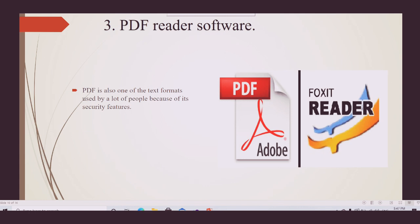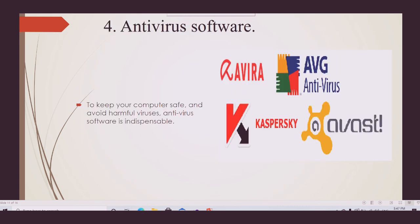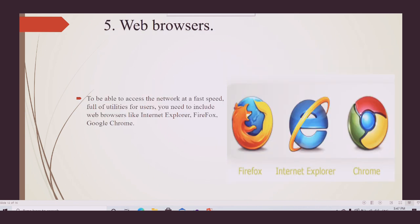Number four: antivirus software. To keep your computer safe and avoid harmful viruses, antivirus software is essential for security. Number five: web browser. A web browser allows you to access the network at fast speed with many useful utilities.